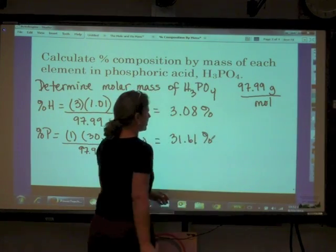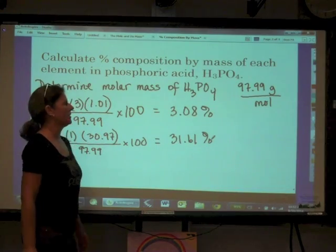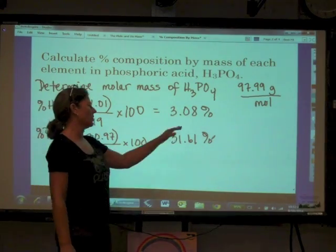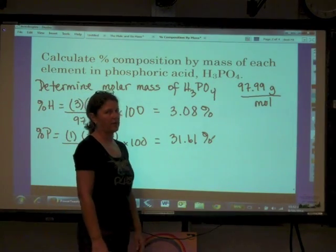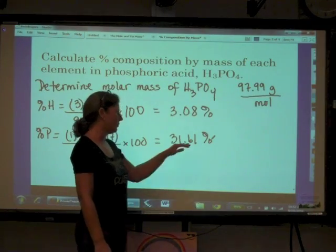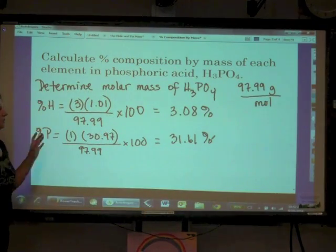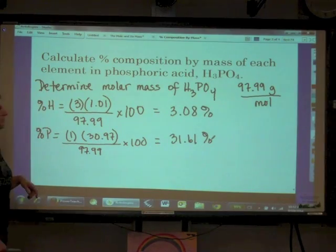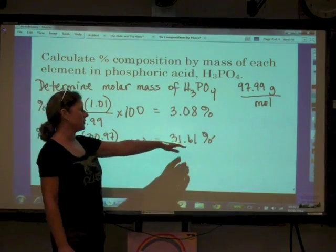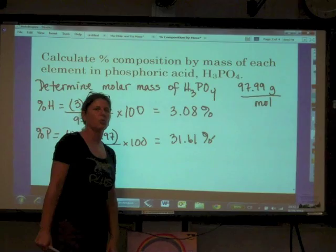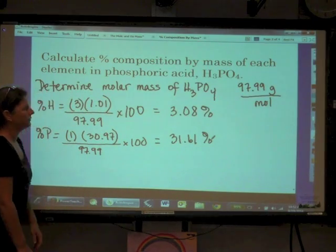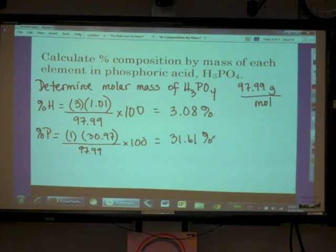By convention, in terms of significant figures here, we're going to always take this to the hundredth place. Percentage by mass, we're always going to take it to the hundredth place. So in terms of the overall mass of this compound, phosphorus is contributing 31.61% of its mass.